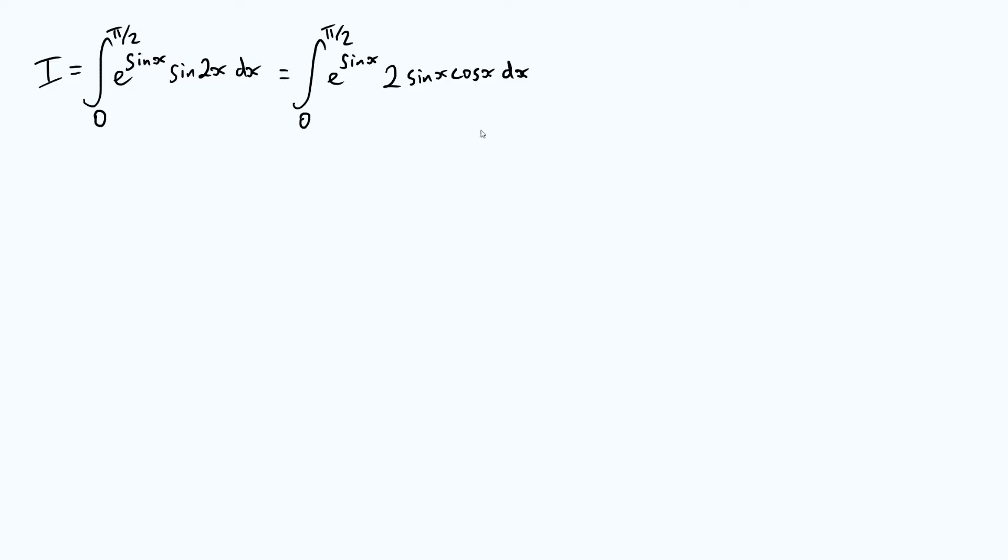Now I'm just going to do one more thing to this. I'm not really changing anything. I'm just kind of reordering the terms for now. I'm going to write this as two sine x cos x e to the sine x dx.